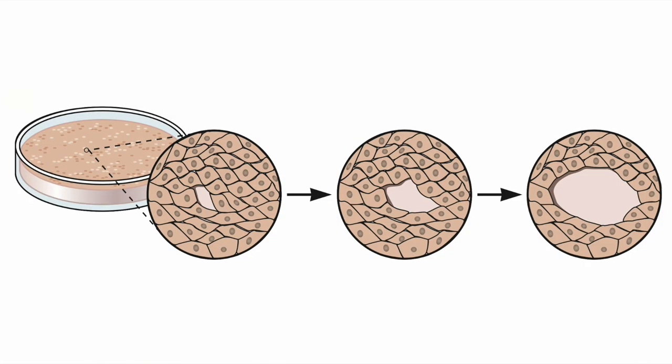The formation of a plaque is shown in this series of drawings. You can see, first, a single cell is infected. Viruses released from this cell go on to infect neighboring cells, and so on, causing the zone of cell killing to increase in size until it's visible to the naked eye.